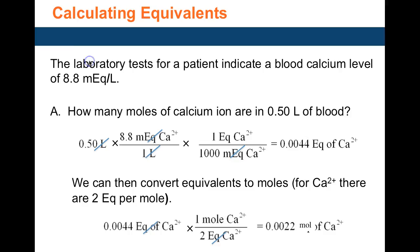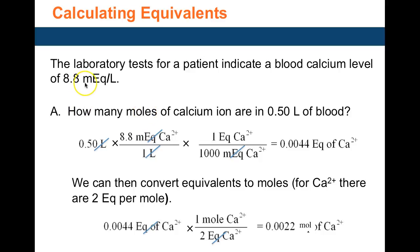Continuing with equivalents and electrolytes, this study check problem shows how to convert milliequivalents into moles. You start out with 8.8 milliequivalents per liter of calcium, and the problem asks how many moles of calcium ion are in 0.5 liters of blood. Per liter it's 8.8 meq of calcium ions, so half a liter would be half that amount: 4.4.